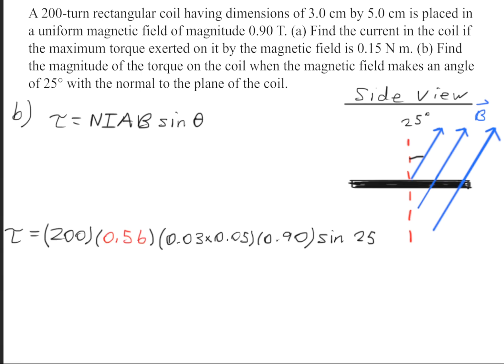Once again we're going to use the torque equation and plug in the numbers given to us. We have 200 turns, and recall we got a current of 0.56 amps. Once again here's the area - remember you have to change it from centimeters to meters. We have 0.9 tesla, and the angle is 25 degrees from the normal. This will give us a torque of 0.064 newton meters.